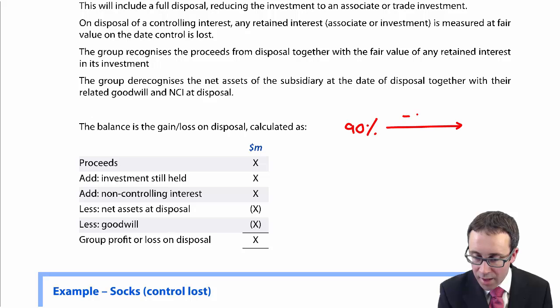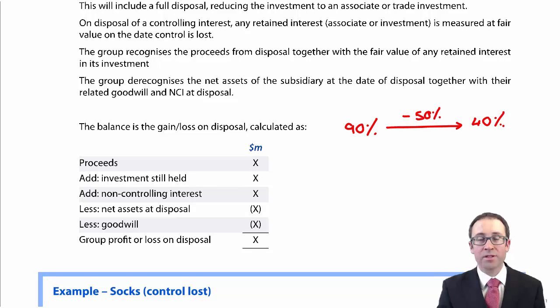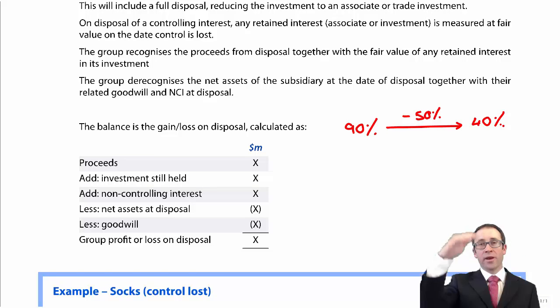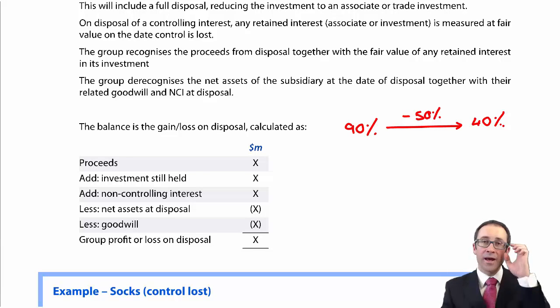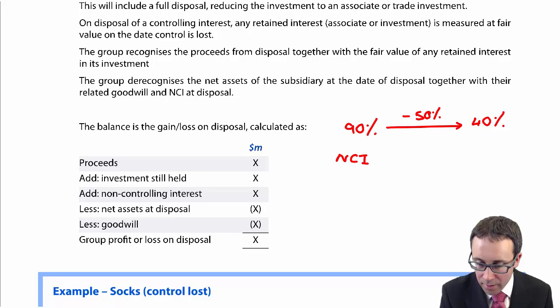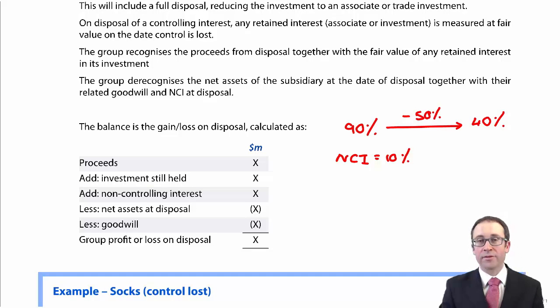So let's say, for example, we own 90% of the sub. And if we decided to sell 50%, that takes us down to 40%. We've gone down from 90 to 40, passed the accounting bound, and we now no longer consolidate. We need to remove that non-controlling interest because we now no longer consolidate.